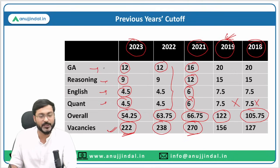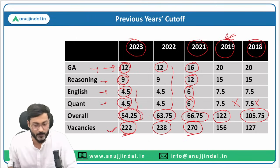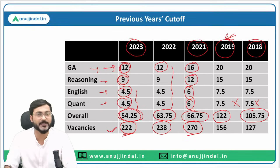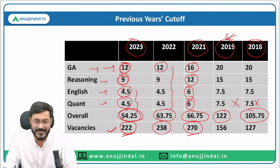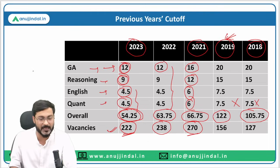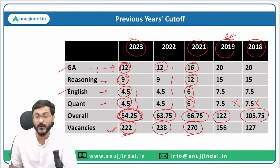Looking at the 2023 figures closely: GA cutoff is 12, Reasoning is 9, and Quant and English are 4.5 each, with an overall cutoff of 54.25. Many people face problems in Quant and Reasoning — their sectional cutoff doesn't clear. But English and GA sectional cutoffs are generally cleared easily, and these are the subjects that must be used for clearing the overall cutoff.